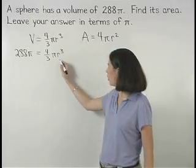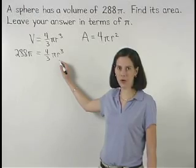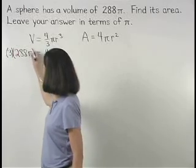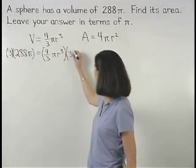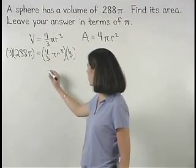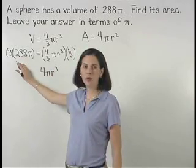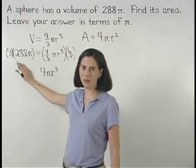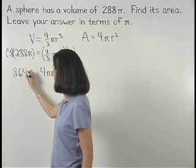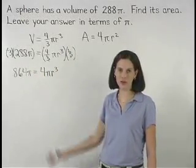So we can set up the equation 288 pi equals 4 thirds pi r cubed. Now, to solve for r, we first get rid of the fraction by multiplying both sides of the equation by 3. On the right side, the 3's cancel and we're left with 4 pi r cubed. And on the left side, 3 times 288 pi is 864 pi, so we have 864 pi equals 4 pi r cubed.